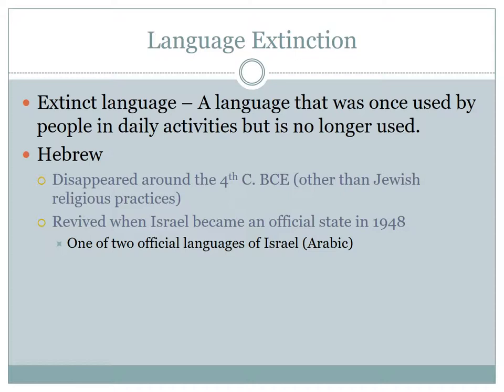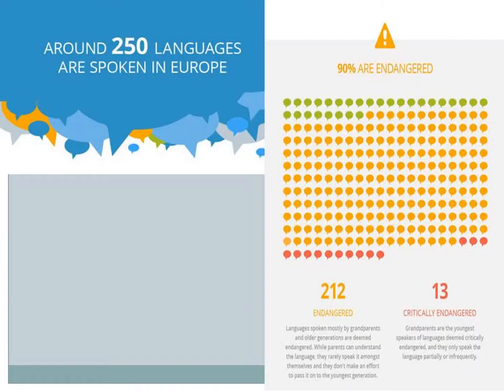Most languages on the verge of extinction are languages of indigenous cultures, particularly in the Americas and the Pacific, highlighting their isolation and the pressure to adopt culture traits of majority populations and global languages. Many other languages could be endangered soon because over 90% of all languages are spoken by fewer than 100,000 people. There are a few hundred languages that have 50 or fewer speakers, and most of them are the elderly — parents and grandparents. As they die and the young don't continue that tradition, that's when we tend to see language extinction.